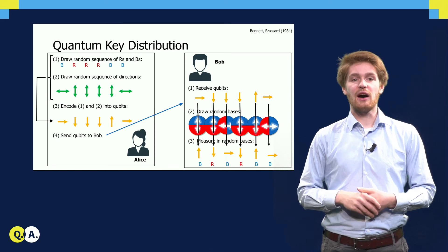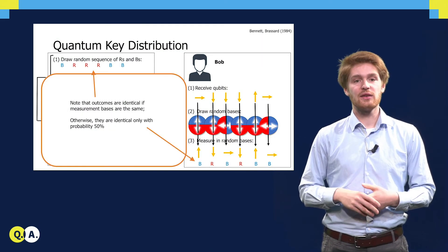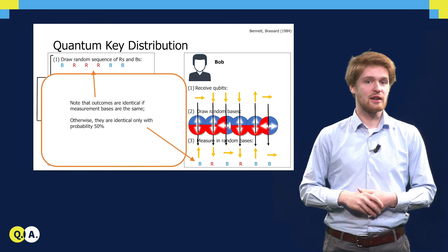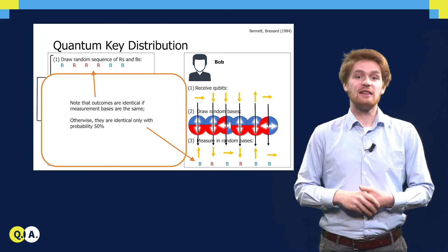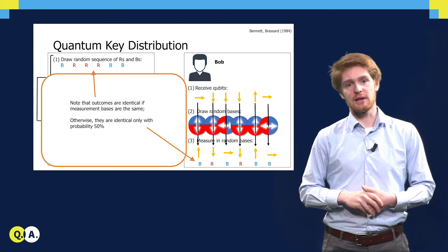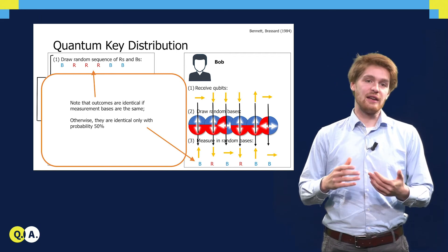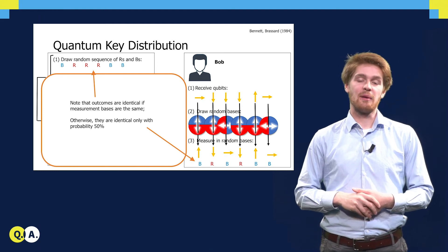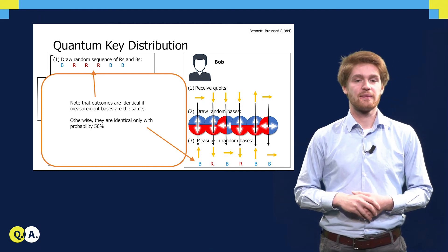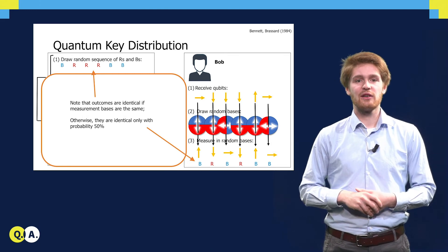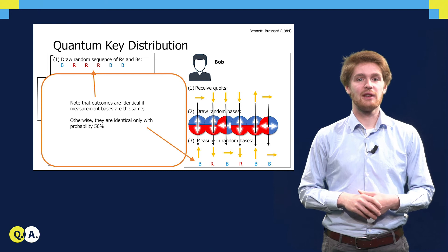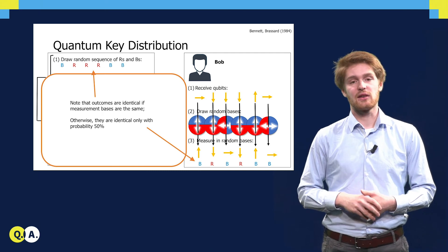Note that this looks surprisingly much like the reverse of what Alice did when she was encoding the qubits. Also note that the outcomes that Bob has are identical to Alice's initial randomly chosen bits, in the case that Alice's chosen direction is identical to Bob's chosen measurement basis. And if these two are different, then the outcomes are different with a probability of 50%. If this went a bit too fast, then I encourage you to pause the video for a bit and convince yourself why the statement here in the orange block is indeed correct.